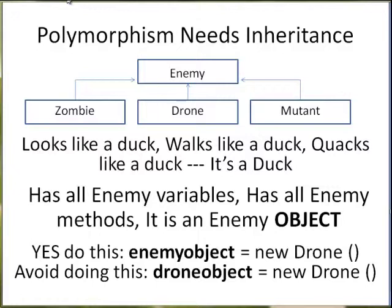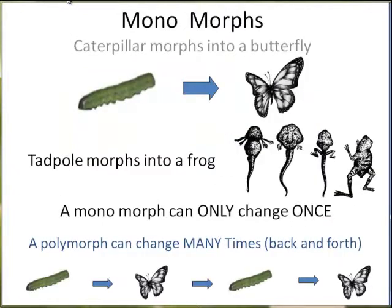Assign new child class objects to type parent class. Monomorphs: a caterpillar changes into a butterfly, a tadpole morphs into a frog. Since they can only do this once, they are monomorphs. A polymorph can change many times, or change back and forth. If there was ever a caterpillar that cocooned and changed into a butterfly, that later shed its wings and grew back into a caterpillar, that later cocooned again back to a butterfly, that would be a polymorph.